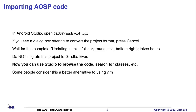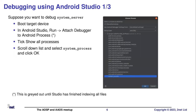But once it's all finished, you can browse the code using Android Studio, which some people think is better than using Vim. That's what we got to last time. The next stage, having done all that, is that it'd be really nice to be able to debug stuff, since Android Studio has a debugger built in. And you can do this.